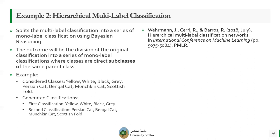Suppose that the multi-label classification algorithm considers the following classes: yellow, white, black, gray, Persian cat, Bengal cat, Munchkin cat, and Scottish Fold. When we apply hierarchical multi-label classification, we generate two classifications. The first deals with colors: yellow, white, black, and gray. The second deals with cat breeds: Persian cat, Bengal cat, Munchkin cat, and Scottish Fold.